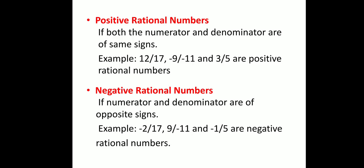Coming to negative rational numbers: these are numbers where the numerator and denominator are of opposite signs — if P is positive, Q should be negative, and if P is negative, Q should be positive. For example, −2/17 has a negative numerator (−2) and a positive denominator (17), so both are of opposite signs and it is a negative rational number. Similarly, 9/−11 has a positive numerator and negative denominator, making it a negative rational number as well.